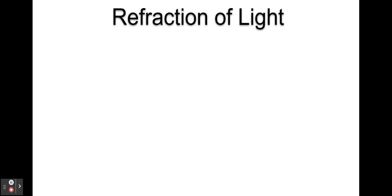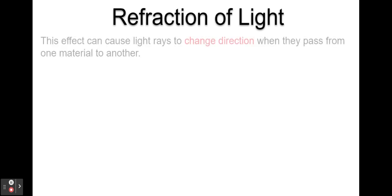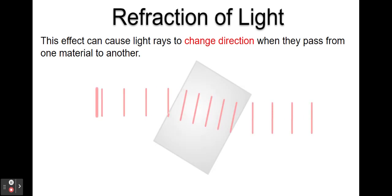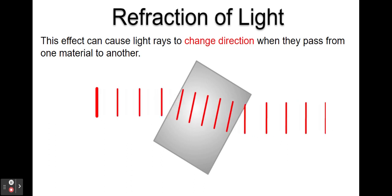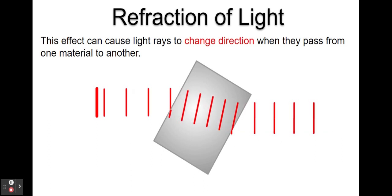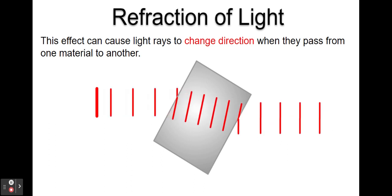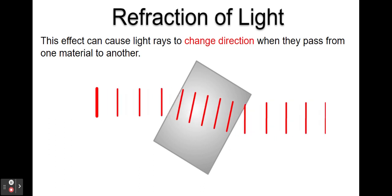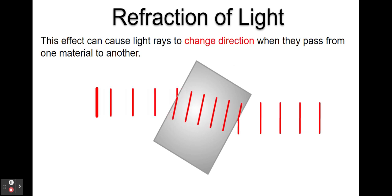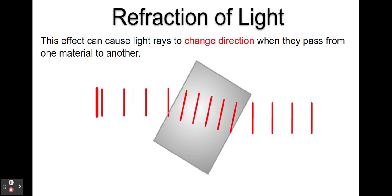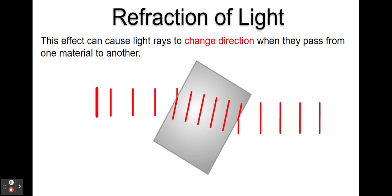The third effect of refraction is that it can cause a change in direction if the light doesn't hit the block at 90 degrees to the side of the block. The light rays are still slowing down and the wavelength is still decreasing as they enter the block, but the direction they're traveling also changes — and then similarly as they leave the block on the other side.